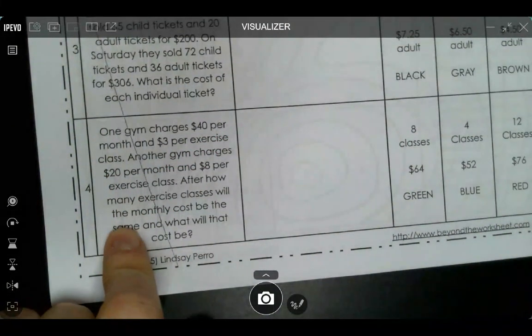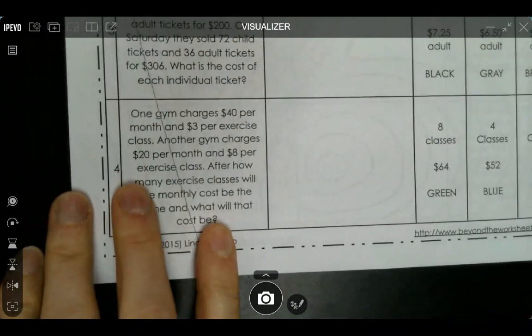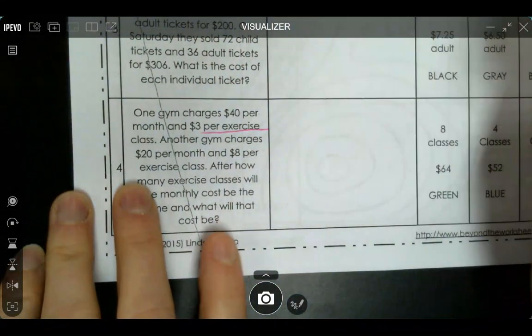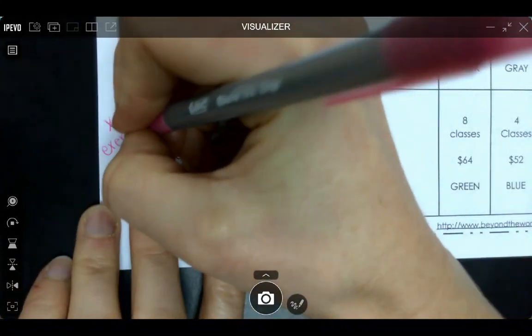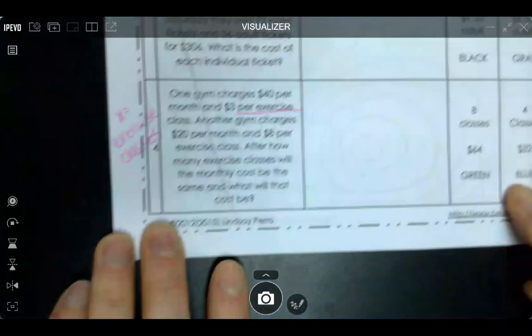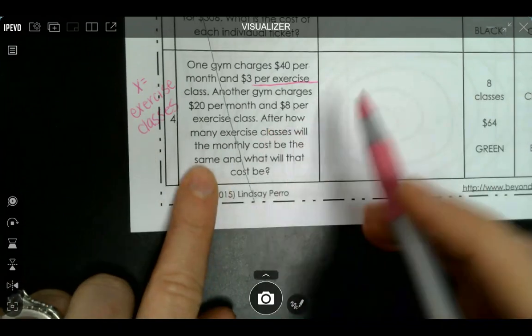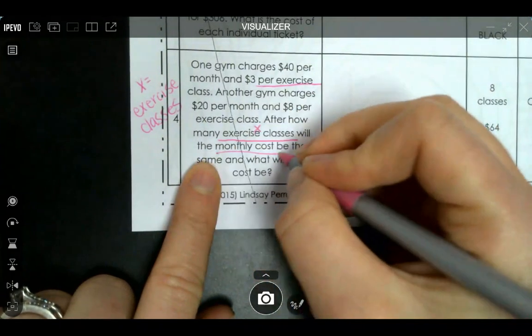What we are going to do is we are just going to look at one month at a time because it's billed by the month. So our variables are going to be not the months, it's going to be exercise classes and then cost. We're going to say x is going to be the exercise classes, so I'm going to put the variable over here. It says after how many exercise classes, so that's your x, and the monthly cost, so we're going to say monthly cost is y.